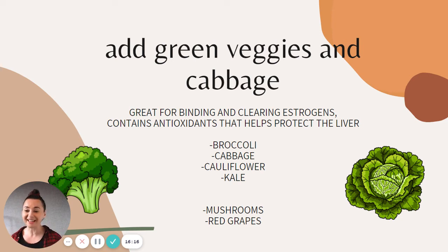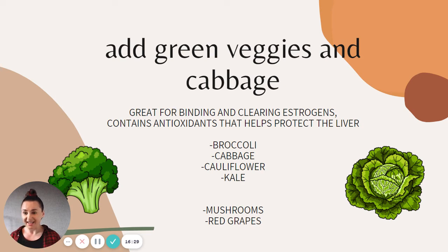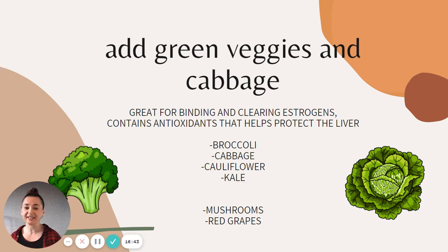Add greens, vegetables, and cabbages. This helps your body metabolize excess estrogen — they're very good for binding and clearing estrogen, and contain antioxidants that help protect your liver. The liver is so important because it helps us process toxins and get rid of excess estrogen. The four go-to greens are broccoli, cabbage, cauliflower, and kale. Mushrooms and red grapes are also good for lowering estrogen.